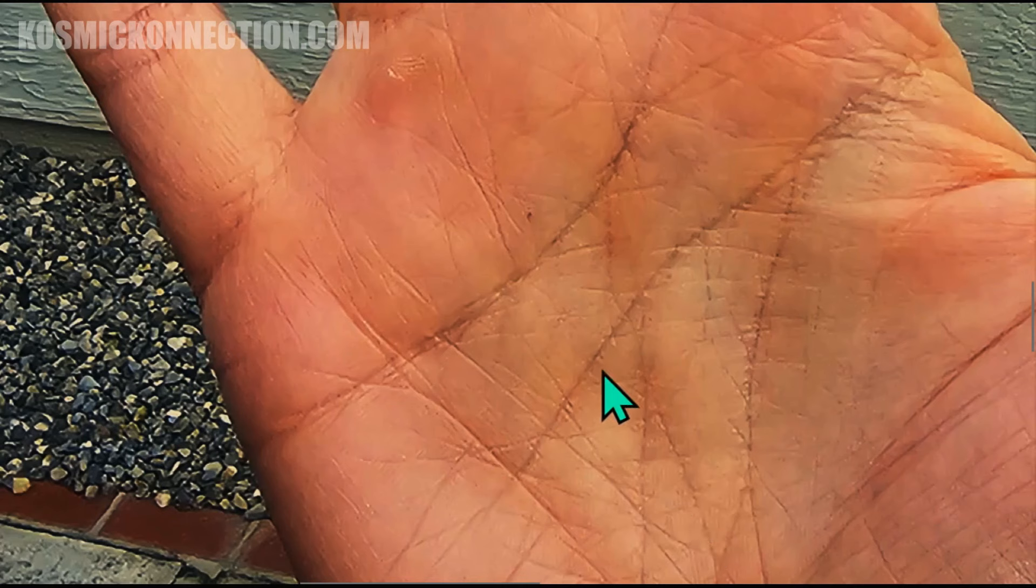Now what these lines represent - we start here at the top of the headline, and these are vertical lines that go up towards that Mercury finger, that pinky finger.